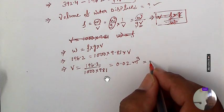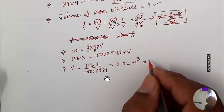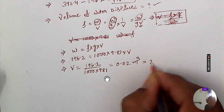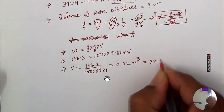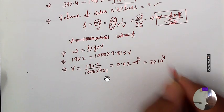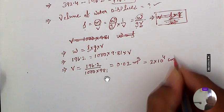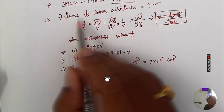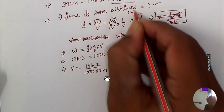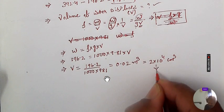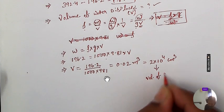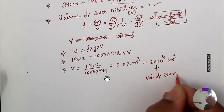Converting to centimeter cube, this is approximately 2 × 10⁴ cm³. This V is the volume of the water displaced, which is nothing but the volume of the stone. This is the answer for the first part.